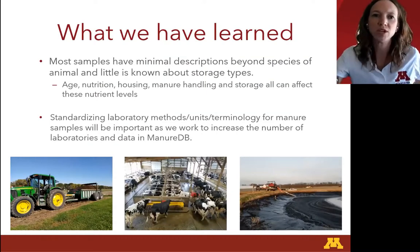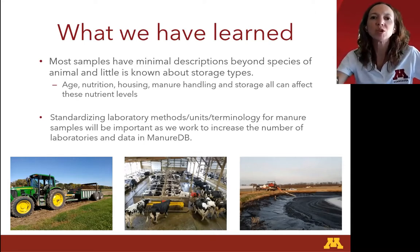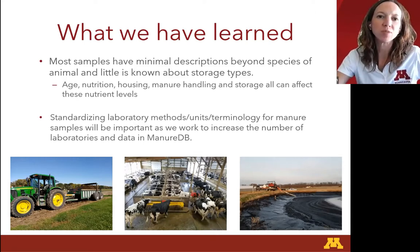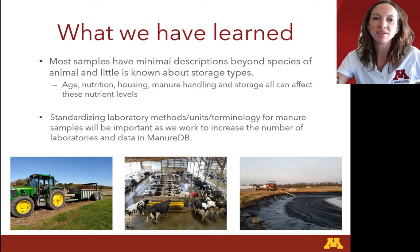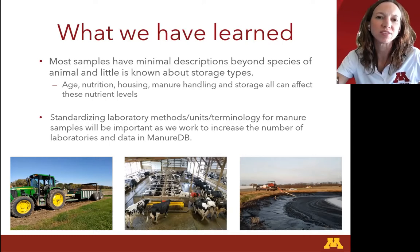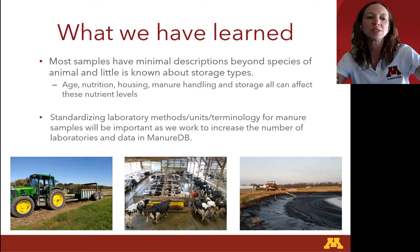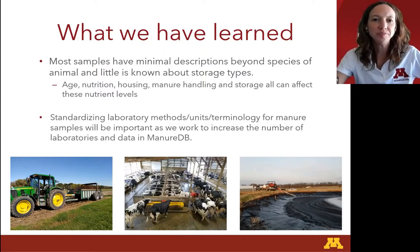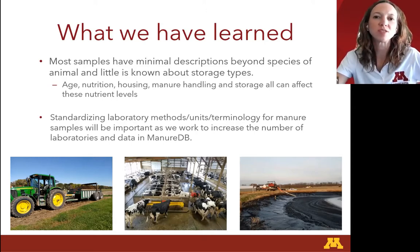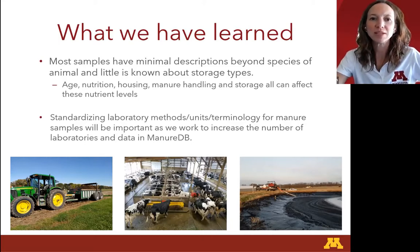A few things we've learned: a lot of these samples had minimal descriptions beyond the species or type of animal, and we didn't know what kind of manure storage structure was used for the most part. We do know that age, nutrition, housing, manure handling, and storage all affect nutrient levels, so having more detail would definitely help make more specific book values in the future. Standardizing lab methods, units, and terminology will be important to make accurate comparisons as we create ManureDB and increase the number of laboratories we work with.